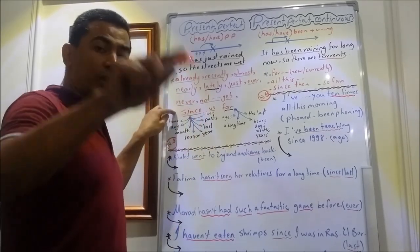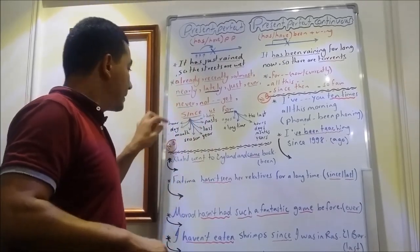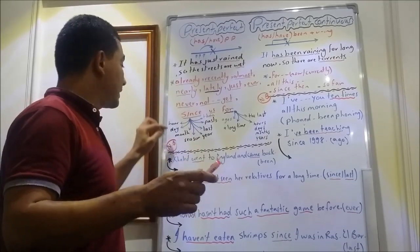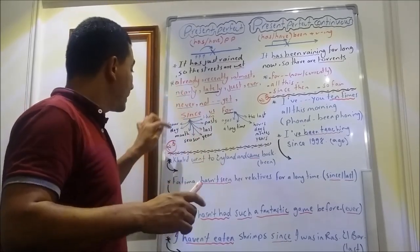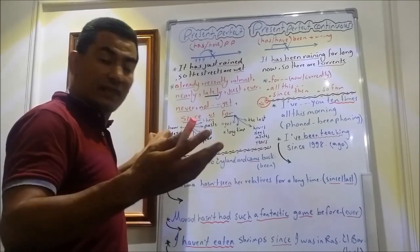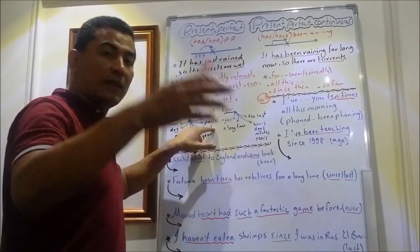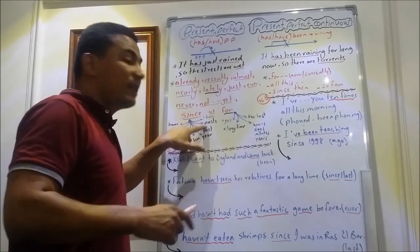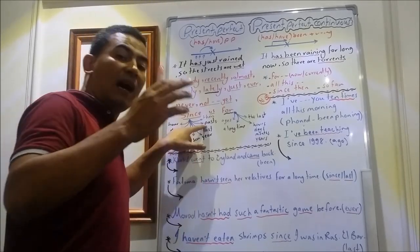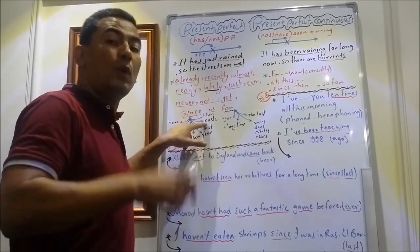Since is followed by point of time. If I say since five o'clock, since Monday, since October, since spring, since 1990, or since last week, last month, or since past simple. If I say I haven't seen him since we were in Alex, or since then.